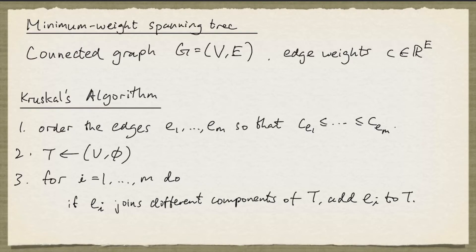Next, we look at Kruskal's algorithm. For this algorithm, we have to label the edges E1 up to Em so that the edge costs are in non-decreasing order. In other words, the cost of E1 is at most the cost of E2 and so on.